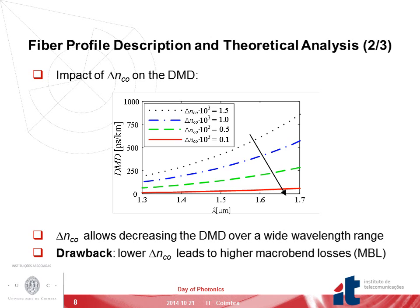In this figure, we can see that low ΔNCO values lead to low DMD over a wide wavelength range. However, the use of low ΔNCO values leads to higher macrobend losses. Therefore, macrobend losses have to be taken into account during the optimization process.